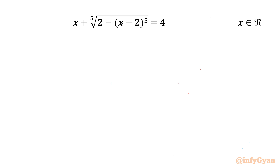Welcome back to InfiGam, my dear friends. In this video we have another challenging and interesting question from Radical Equations. The equation is x plus the fifth root of (2 minus x minus 2) whole power 5, equal to 4, where x belongs to real numbers. So let us get started.